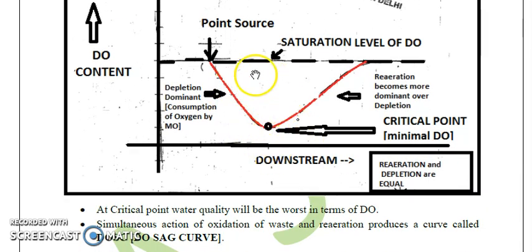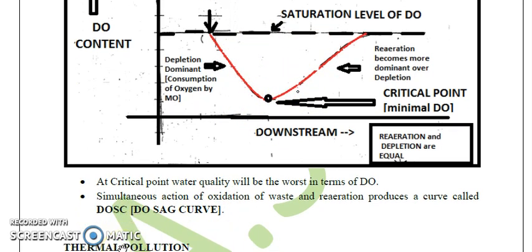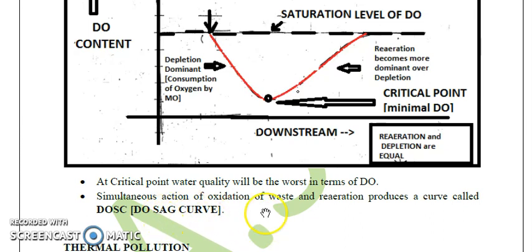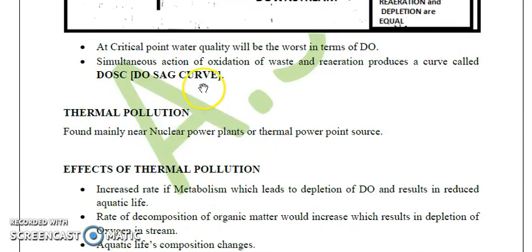The DO sag curve can be defined as follows: the simultaneous action of oxidation of waste and reaeration produces a curve called the DO sag curve. In other words, when we study the oxidation of waste in a water body and reaeration simultaneously, the curve drawn is called the DO sag curve. Next, we will discuss thermal pollution.